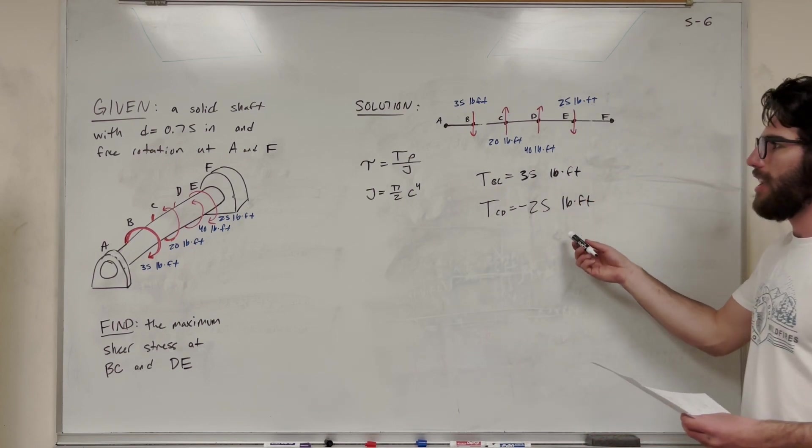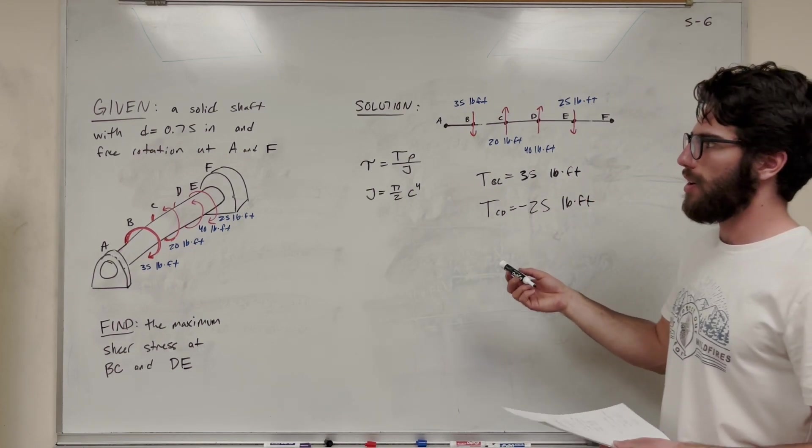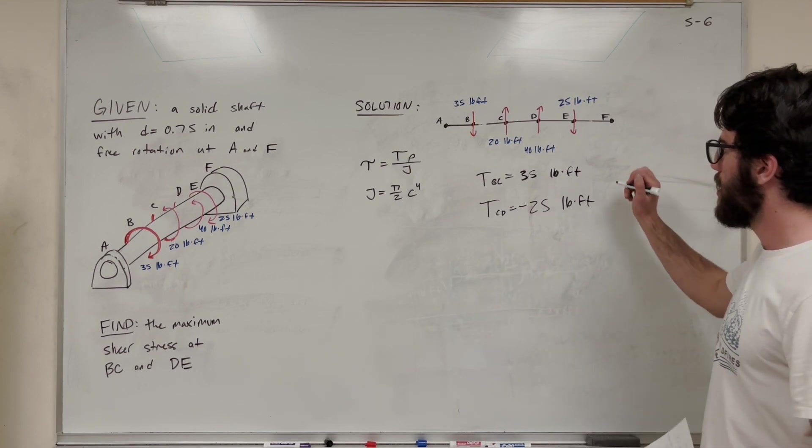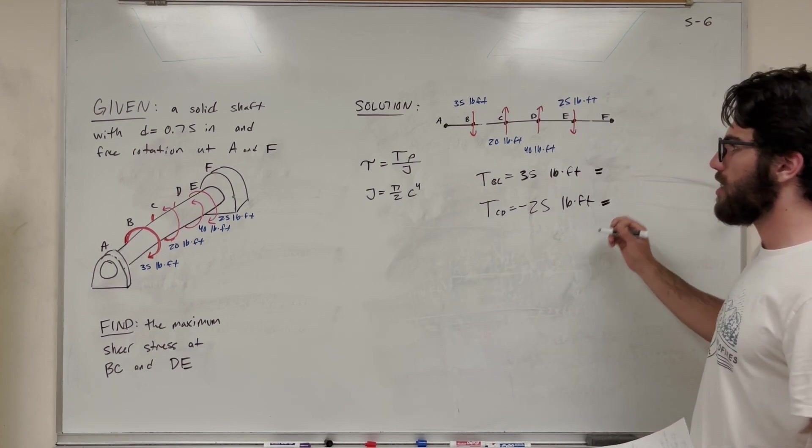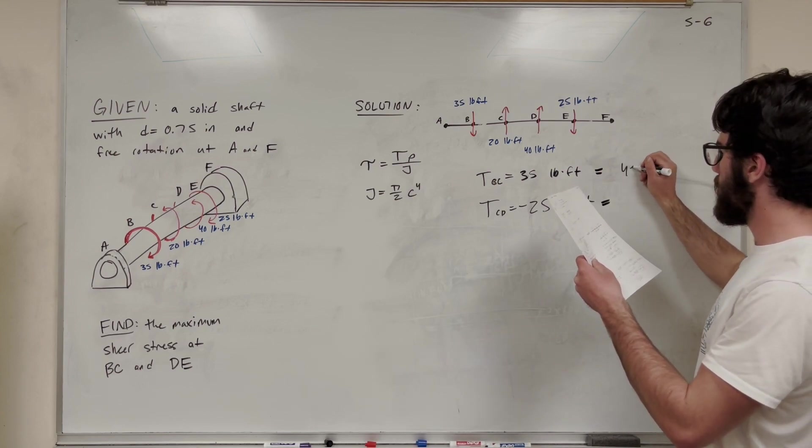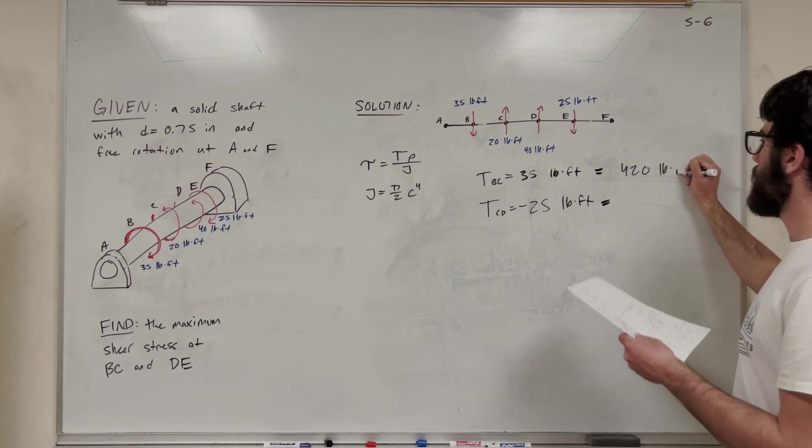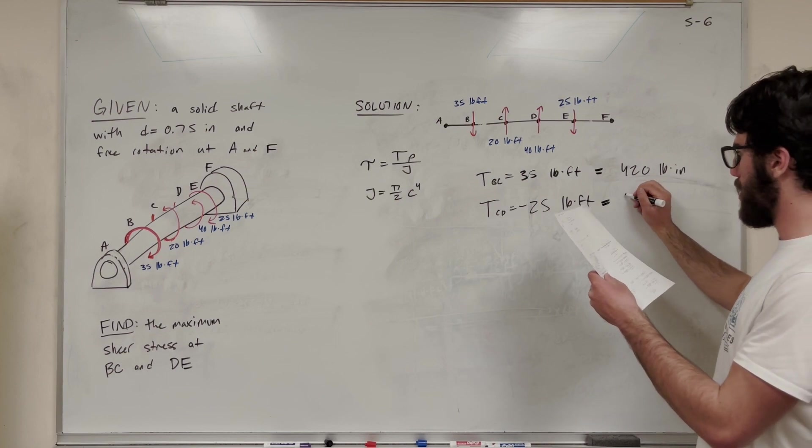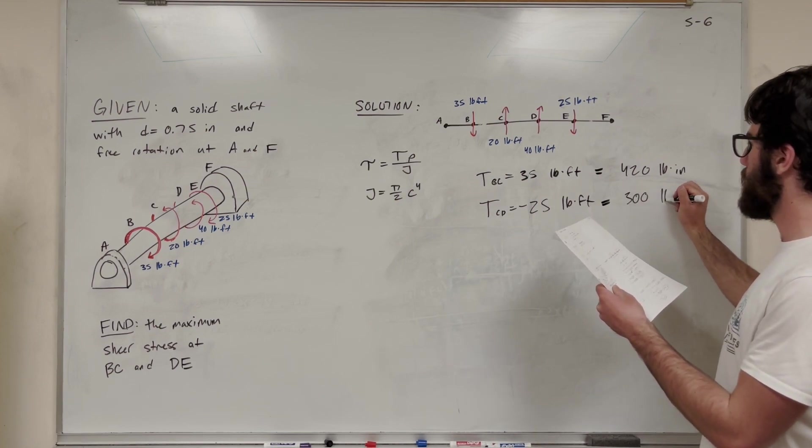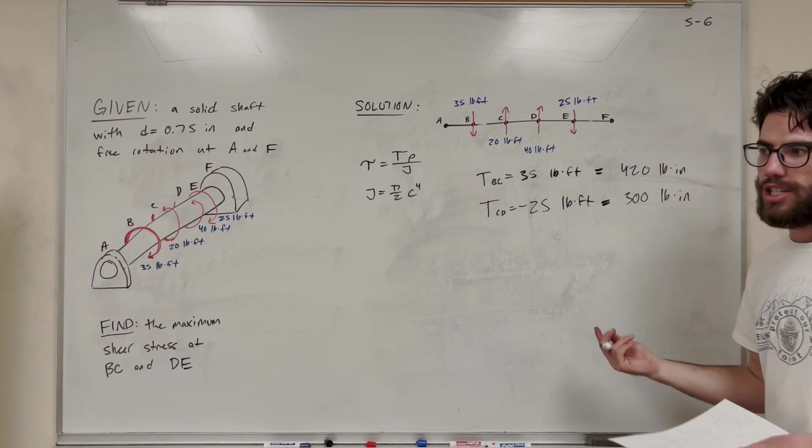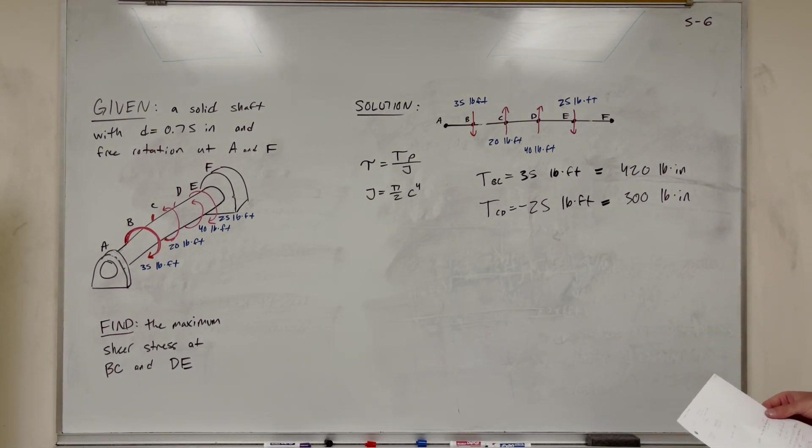So we have them in pound feet, but we want them in pound inches because we're going to find basically psi is our unit. So to convert from pound feet to pound inches, you multiply by 12. In that case you're going to get 420 pound inches and then for this one you're going to get 300. I'm just going to make it positive because it doesn't matter what direction it's facing. We're just looking for the maximum shear stress.